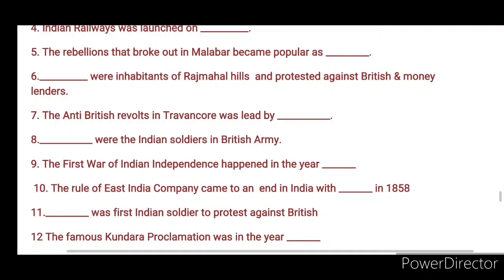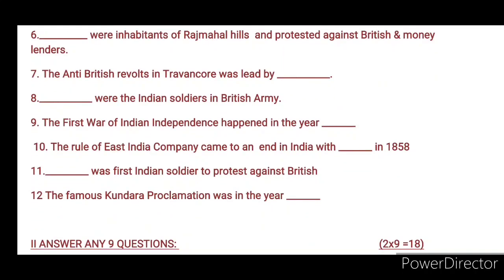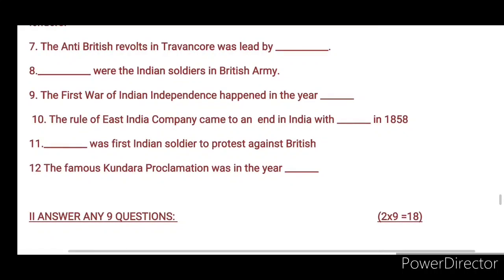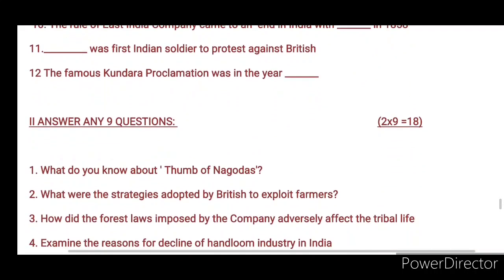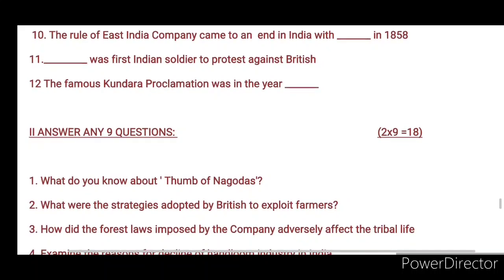The second section is: answer any nine questions. Nine questions, two marks each. First question: what do you know about the Thumb of Nagodas? Second one: what were the strategies adopted by the British to exploit farmers?